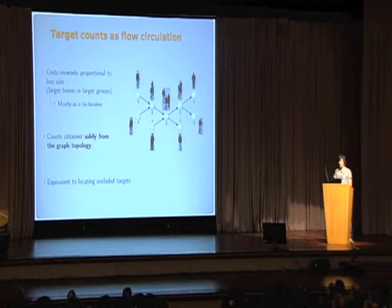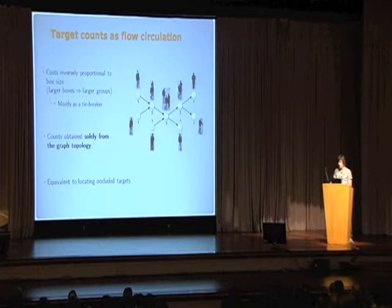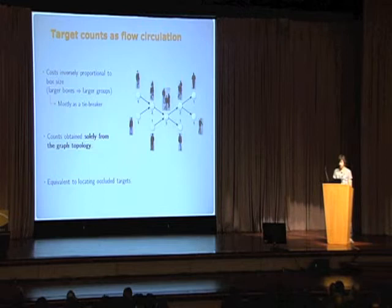Since there may be more than one equivalent solution, we sometimes use bounding box sizes in the cost to break ties. But for the most part, counts are obtained just by analyzing the graph topology, and not by analyzing the images directly. This is equivalent to locating occluded targets, since knowing how many targets are hidden in each tracklet gives us the counts.